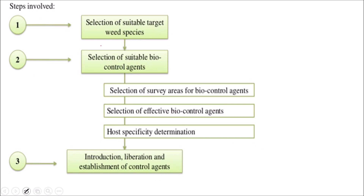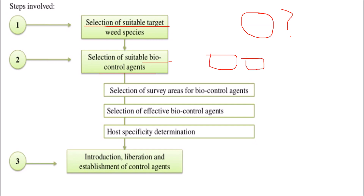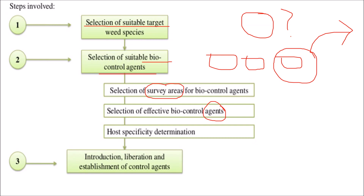What are the different steps involved in biological weed control? First is selection of a suitable target weed species — identifying which weed we are dealing with. Second is selecting a suitable biocontrol agent from the many available options. This happens through a survey of affected areas, selecting a specific and effective biocontrol agent for that area, and host specificity determination. Then we introduce, liberate, and establish the control agents in that area to help the system control the weeds.